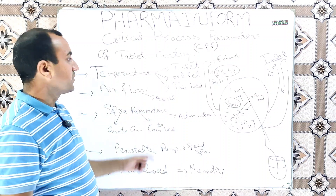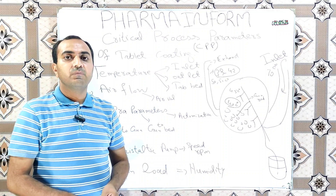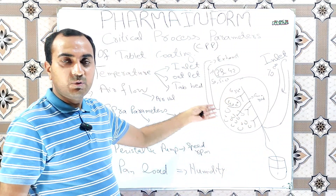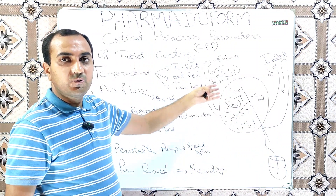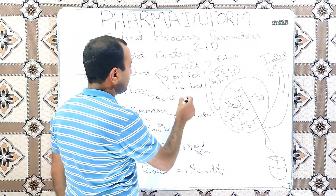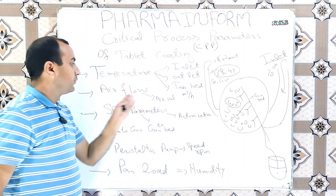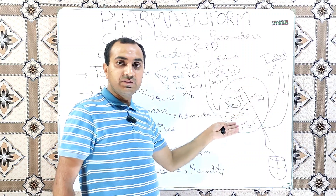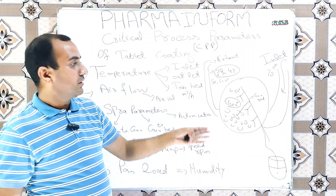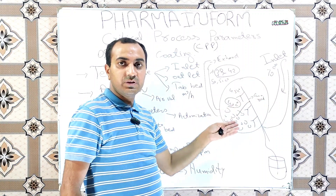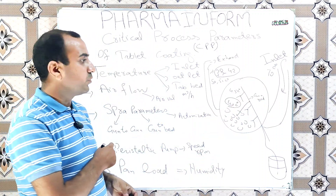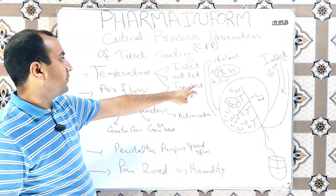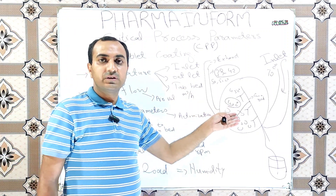The next critical process parameter is airflow. Airflow volume is very critical because it is the volume of air coming from outside that provides heat to our tablets and enables evaporation of solvent. Its unit is cubic meters per hour. If we increase the air volume too much, too much air will come inside. When air volume is increased our inlet air temperature will also increase because more air brings more heat inside, so we must maintain and synchronize our inlet air temperature and airflow according to the physical conditions of the tablet.